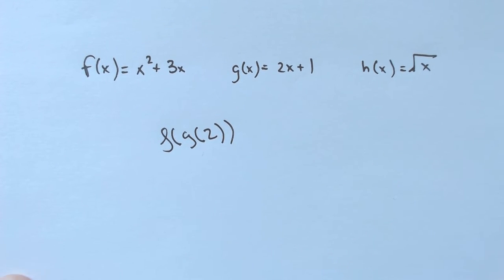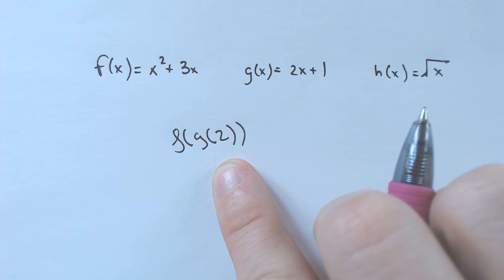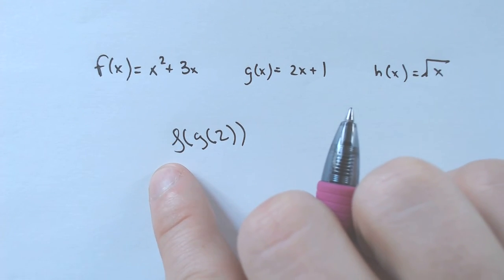f of, let's say, g of 2. So in Algebra 1, you would just be doing g of 2. But in Algebra 2 and higher, you would have to first find what g of 2 is, and then find what f of that is.